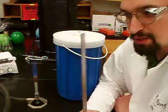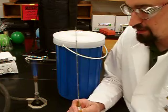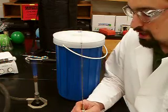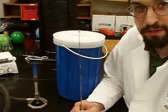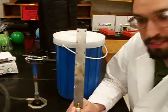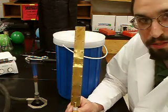Alright, so this here is a bimetallic strip. If you take a look at it, you can see that it's very straight. We call it a bimetallic strip because there's two pieces of metal. There's this steel piece of metal, and there's this brass piece of metal.